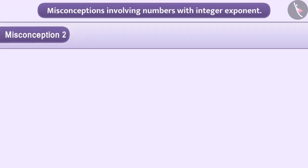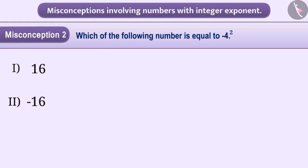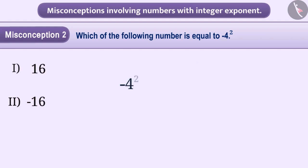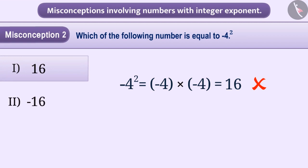Misconception 2: Minus 4 to the power 2 is equal to which of the following numbers? Some children do not know the concepts of negative numbers and negative exponents properly. They think that minus 4 to the power 2 is equal to minus 4 into minus 4, which equals 16. But this is a misunderstanding, and choosing option 1 with this understanding is an incorrect answer.